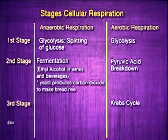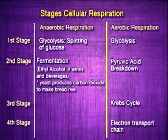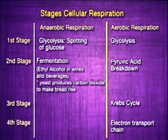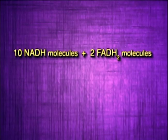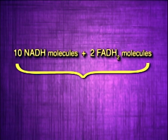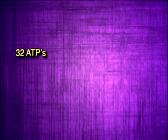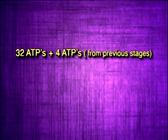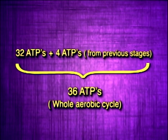Now we're at the end of aerobic respiration, which is the electron transport chain. From the 10 NADH molecules and the two FADH2 molecules from the previous stages, 32 ATPs are formed. If we add this to the previously formed 4 ATPs, we will have a grand total of 36 ATPs for the whole aerobic cycle.